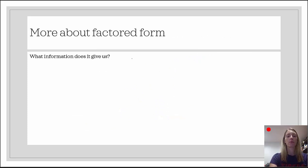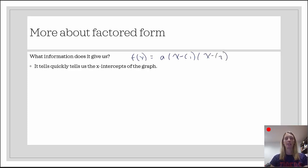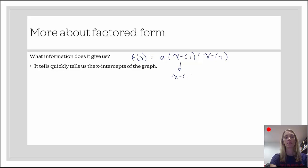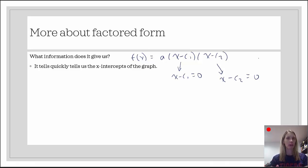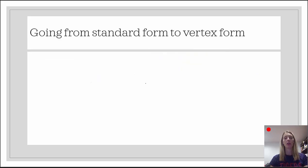The last form is factored form: f of x equals a times the quantity x minus c sub 1, times the quantity x minus c sub 2. It quickly tells us the x-intercepts of the graph. We set the function equal to zero; since a can't be zero, we set each factor containing x equal to zero, giving us the x-intercepts: c sub 1 comma 0, and c sub 2 comma 0. We use factored form when asked to find x-intercepts.